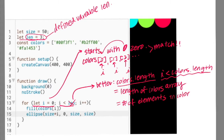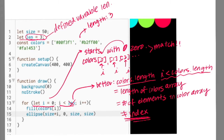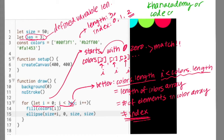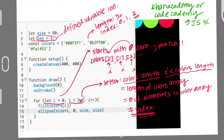A quick tip: don't get confused between the index of an array and the length of an array. Length of an array means how many elements are in your array, but index starts from 0, so your array's last index will always be different from the length of the array. If you're confused with how for loop works, which is totally normal, I highly recommend you to look up Khan Academy or Code Academy.